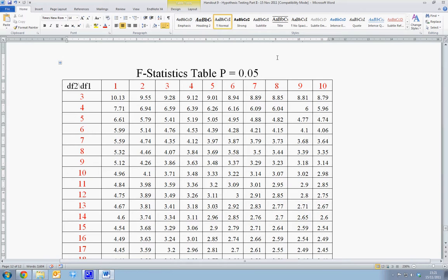The degrees of freedom for the numerator, j, which is at the top line here, essentially refers to the number of constraints which we impose on our model.